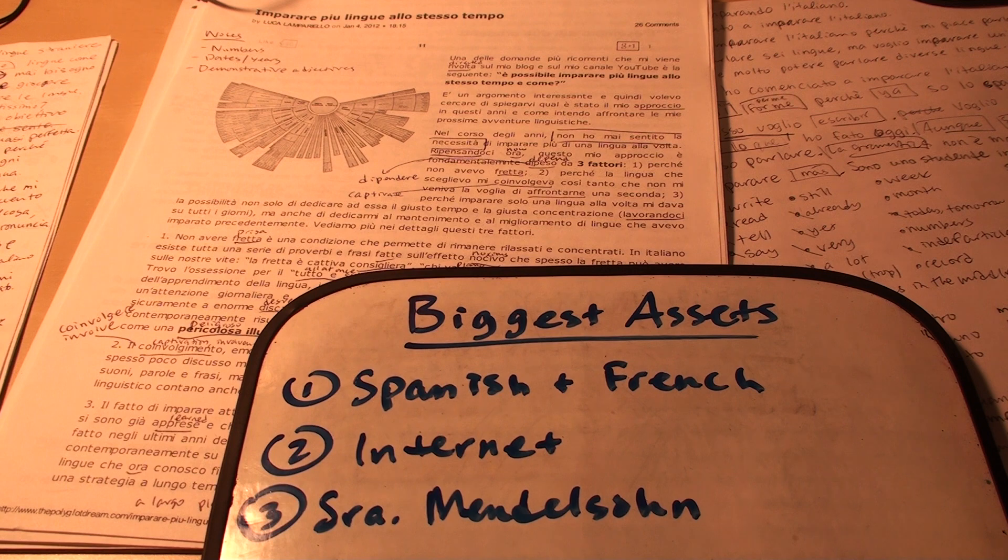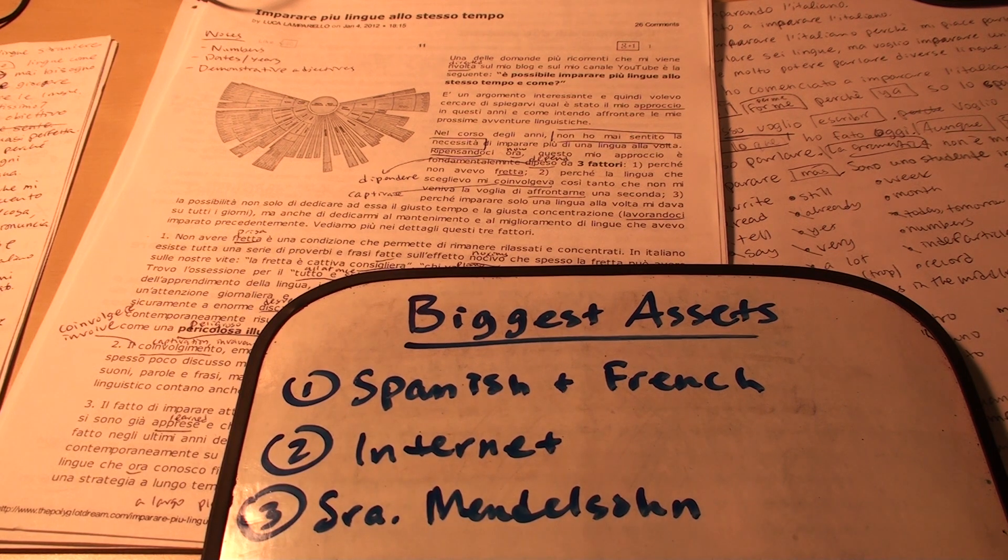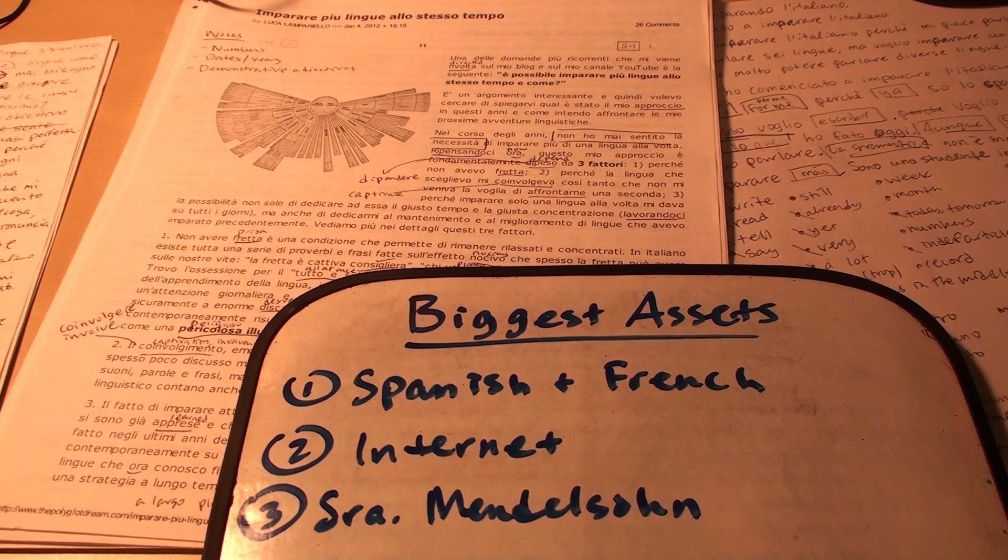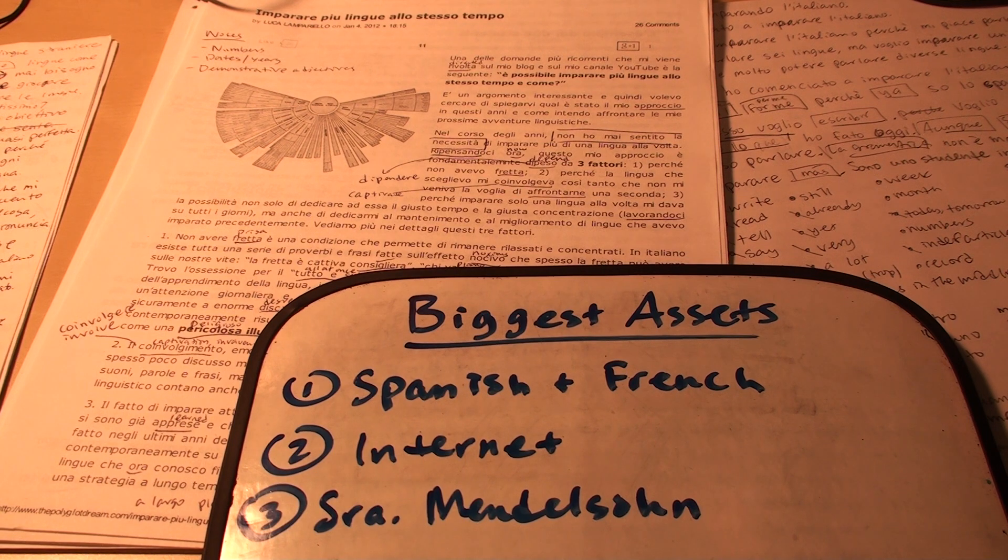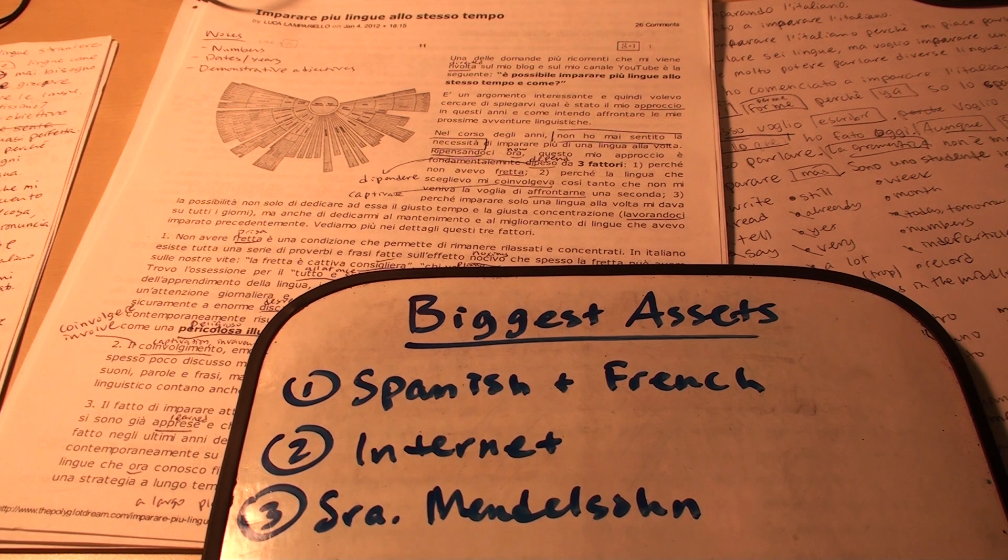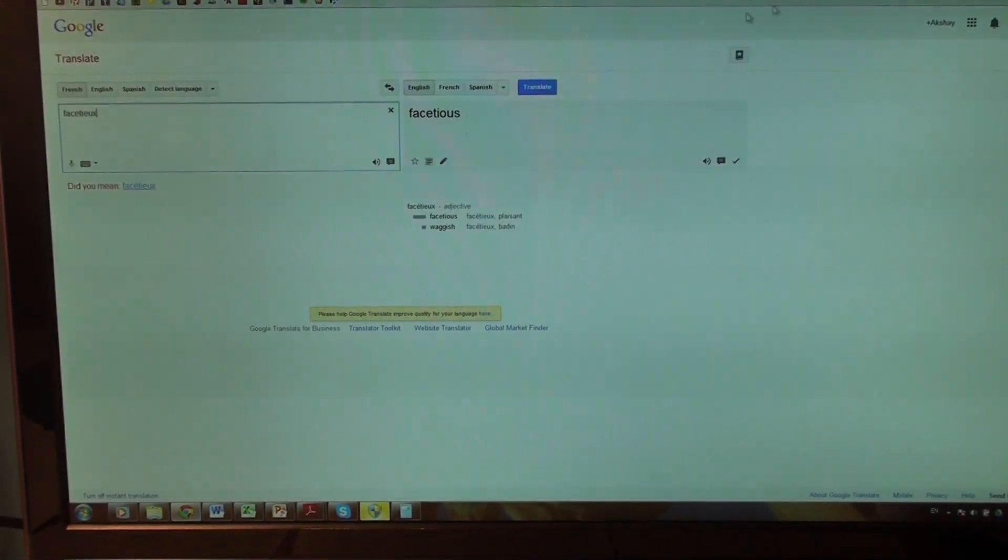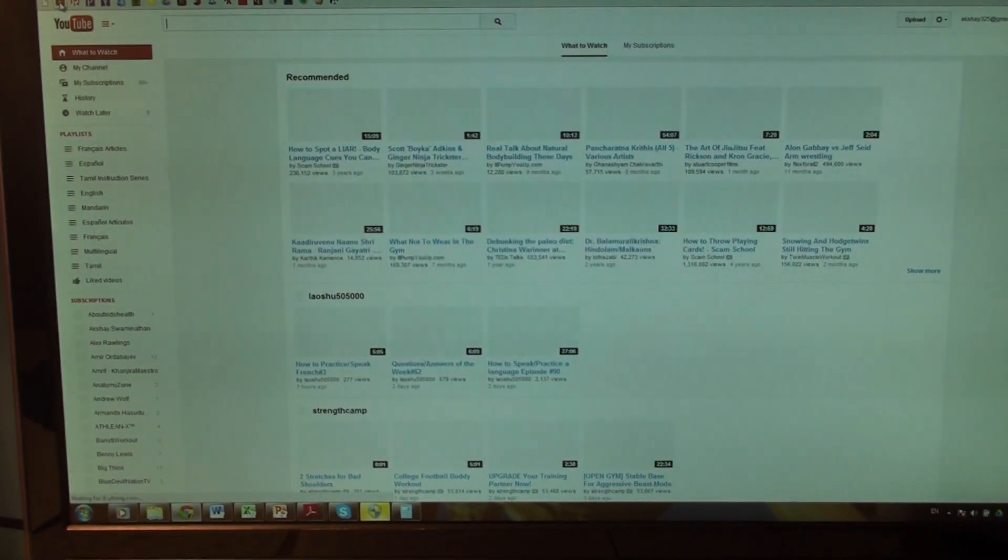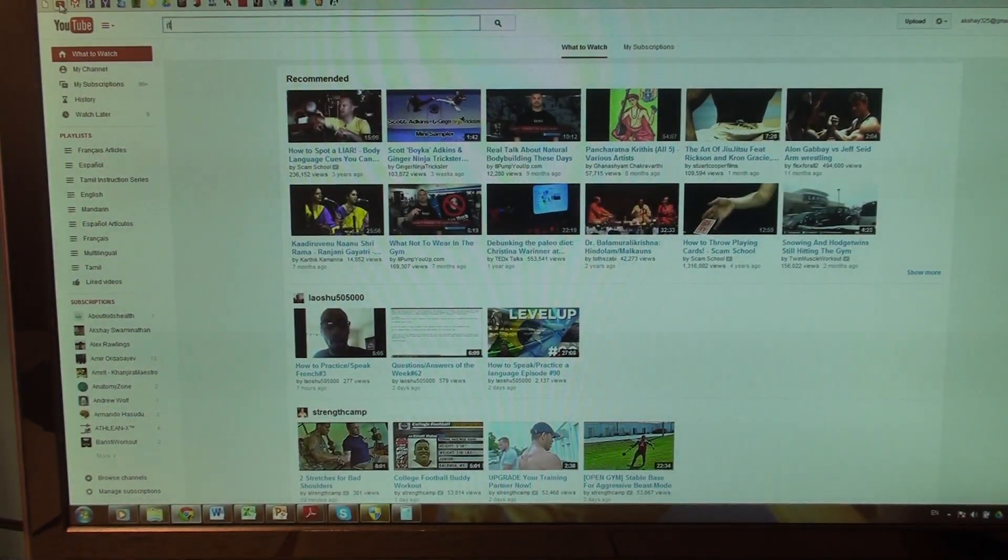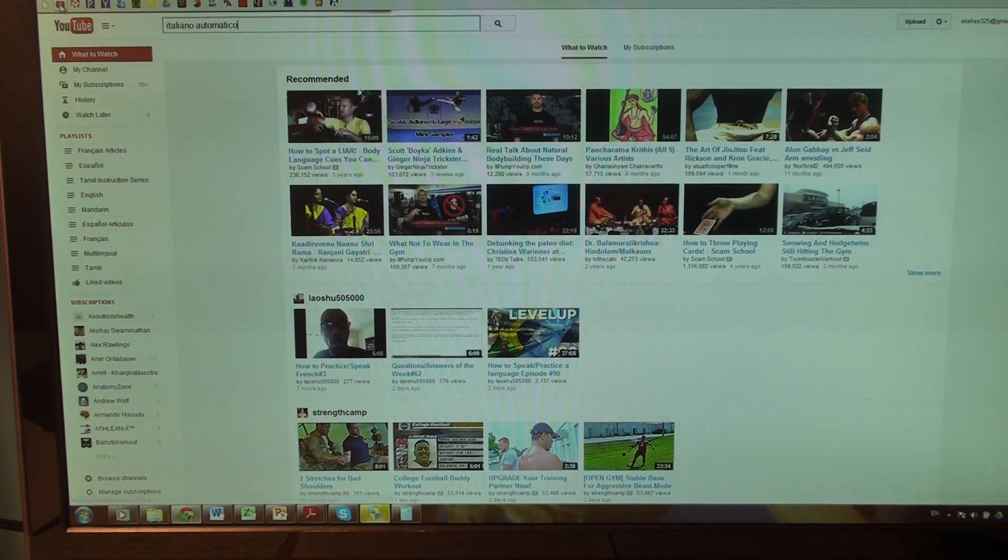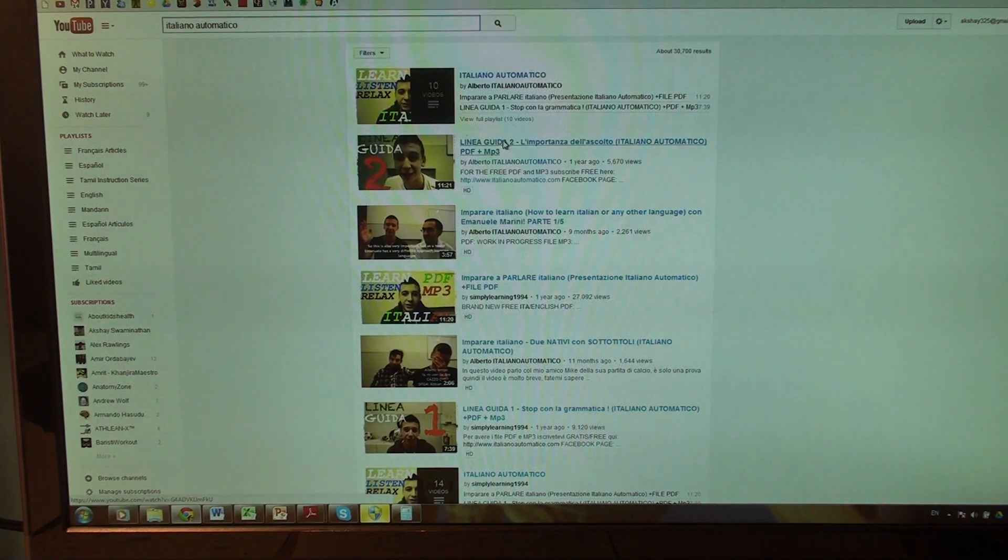Second biggest asset, the internet. So what do I get from the internet? Of course, dictionaries, verb conjugations, also YouTube channels. So, two YouTube channels that were very helpful for me were Alberto, Alberto's Italian channel. So, Italiana Automatico is his channel. So this is him.